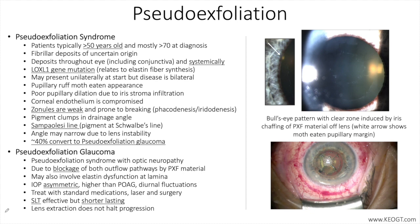The moth-eaten pupillary margin pattern in PXF is thought to be due to focal membrane disruption in melanin-containing epithelial cells. There is a genetic component linked to the LOXL1 gene, which relates to enzymes that cross-link collagen and elastin.